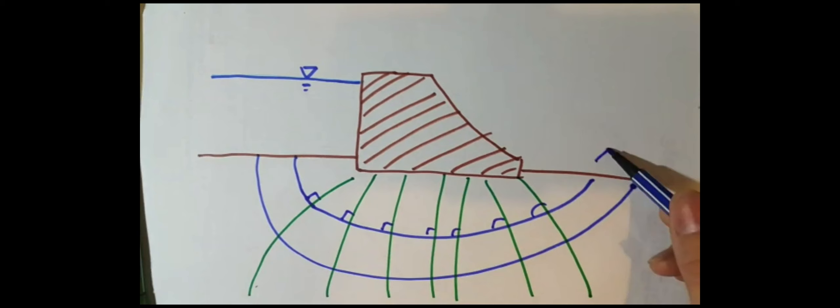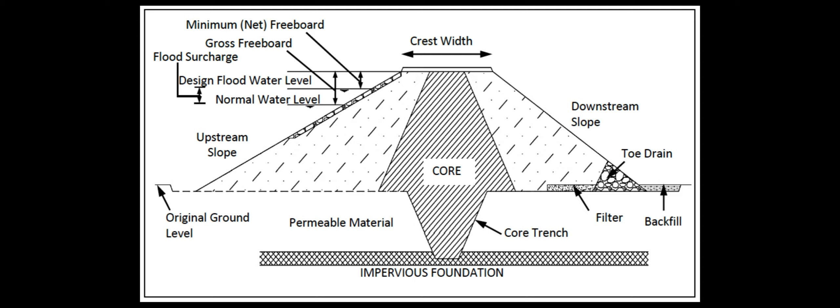Based on this principle, some dams will have a concrete core inside to lengthen the flow path, and hence slow down the seepage. While some other dams may be built using impermeable materials or on an impermeable rock foundation so that water cannot flow through it.